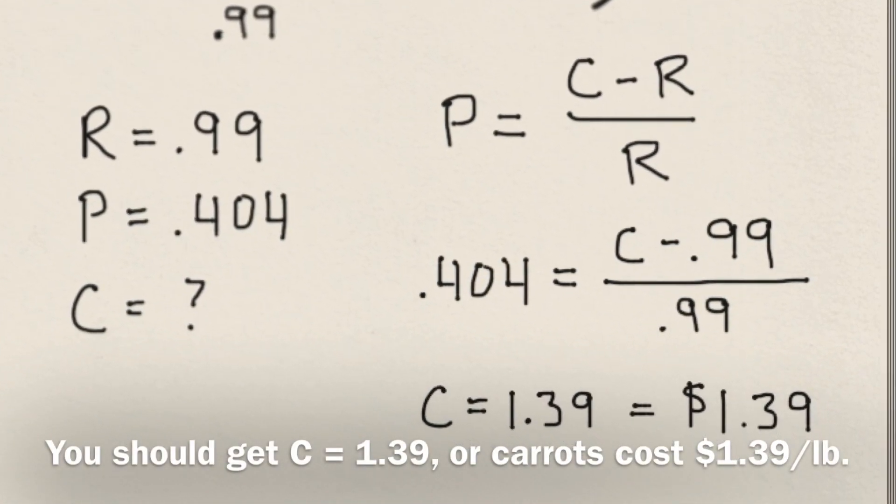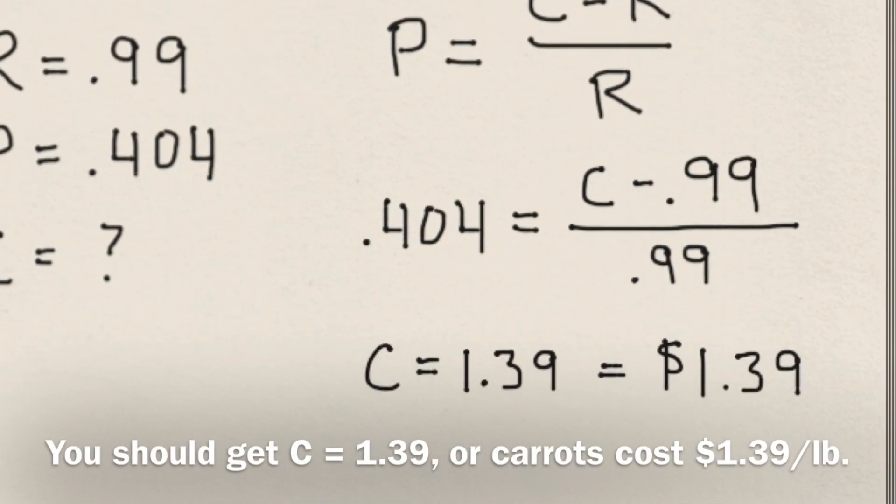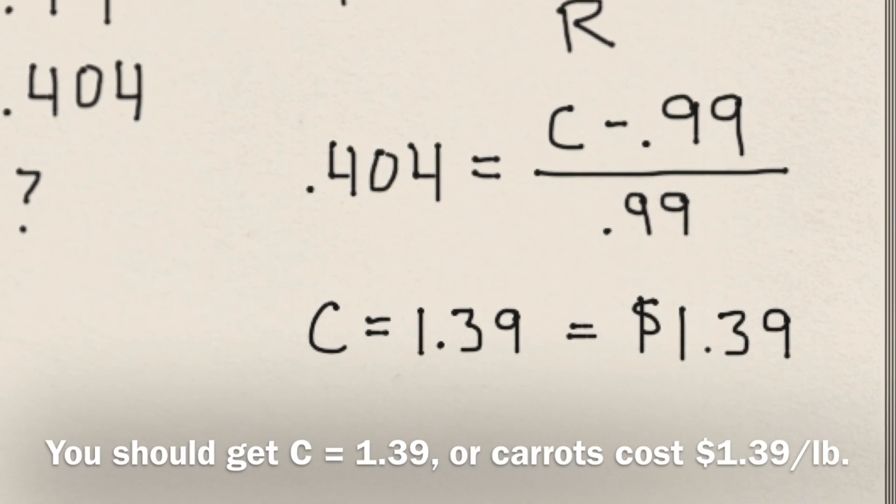You should get c equals 1.39, where carrots cost $1.39 a pound.